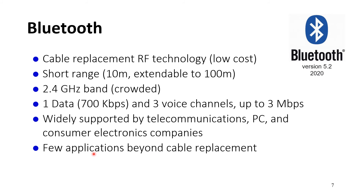Bluetooth may be familiar, but there are different versions — version 5.2 as of 2020, and versions keep improving. It was originally for cable replacement using radio frequency technology. It is low cost and meant for short range, with new versions extendable to about 100 meters. It uses the ISM band at 2.4 GHz, which is very crowded. Data channels range up to 700 kilobits per second, and up to three voice channels at up to three megabits per second. Almost all devices now have built-in Bluetooth.